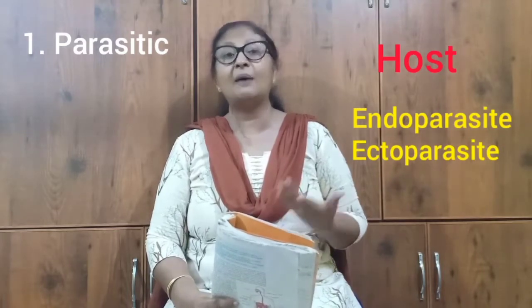A plant parasite example is Cuscuta, commonly called Amarbel. Saprophytic mode of nutrition: organisms which follow this mode are known as saprophytes. Examples of saprophytes are mushroom, fungi, and mold. Mushrooms and molds come under fungi. These organisms break down complex organic substances outside the body of the organism and then absorb it. They live on dead and decaying matter.